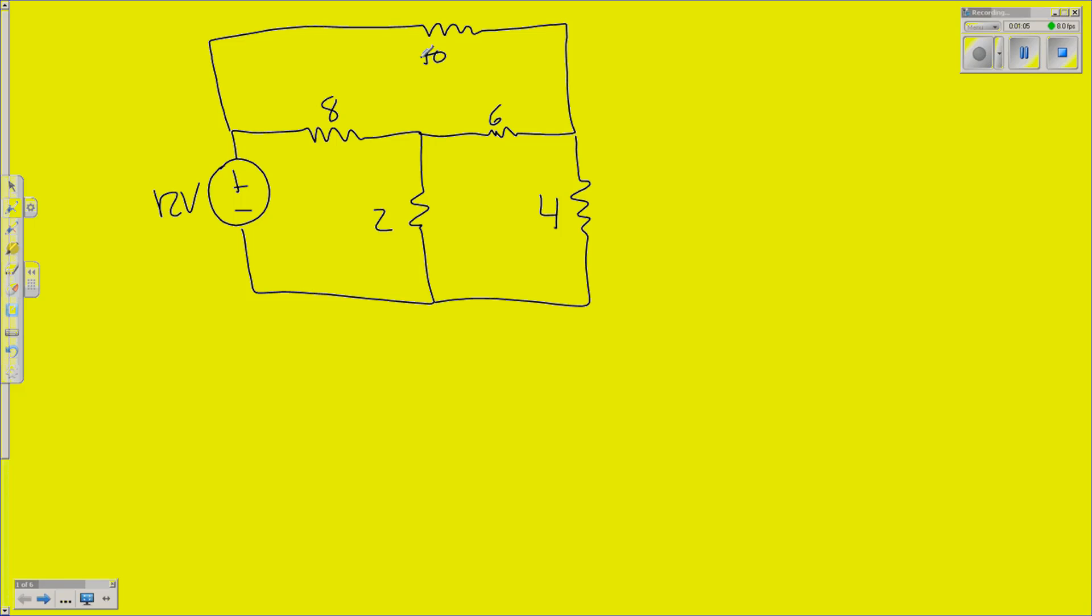Now, to start with node voltage, first you have to find your ground. You can put it anywhere you want. For simplicity, we usually put it at the bottom of the circuit. But, you can put it over here, or over here. Although, that wouldn't make a whole lot of sense since you've got a voltage source there.